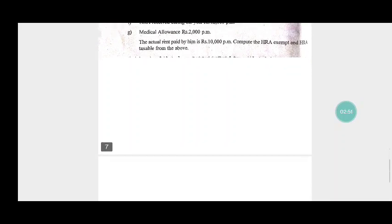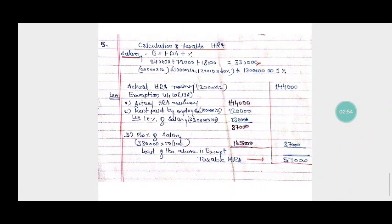So we need to calculate the salary for the purpose of HRA. Calculation of salary for the purpose of calculation of HRA: basic salary plus DA plus percentage of commission. The basic salary is given, Rs. 20,000 per month, that means 20,000 into 12 equals Rs. 2,40,000.